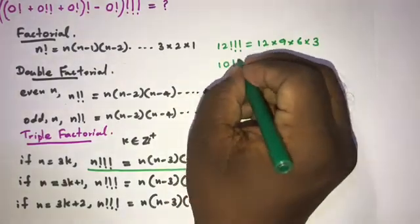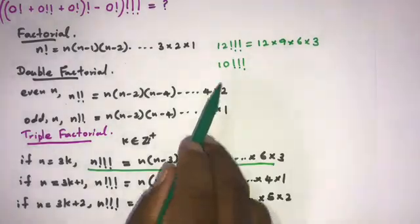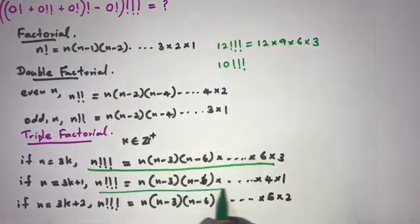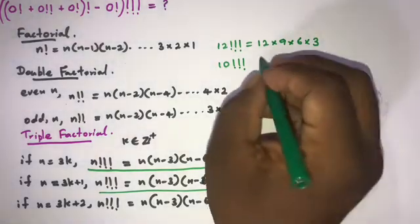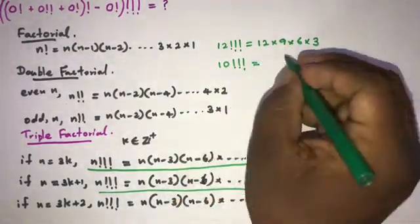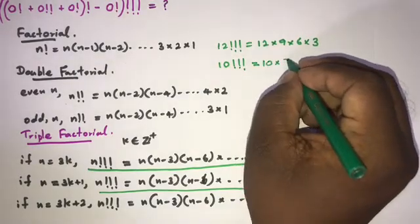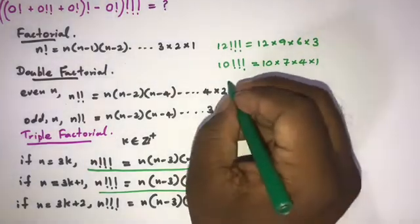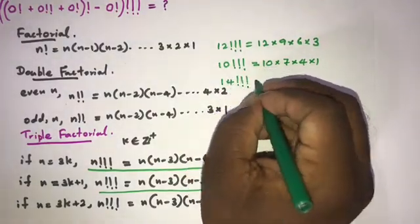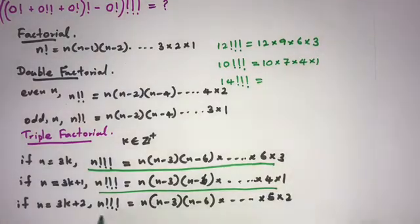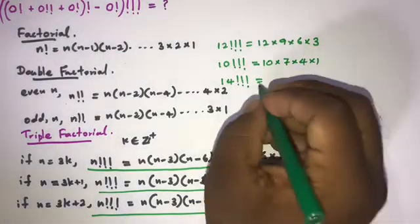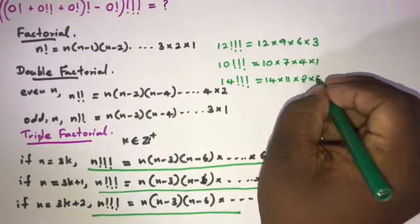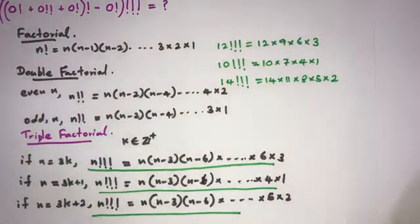For 10 triple factorial: since 10 = 3 × 3 + 1, we use the second formula, giving 10 times 7 times 4 times 1. For 14 triple factorial: since 14 = 3 × 4 + 2, we use the third formula, giving 14 times 11 times 8 times 5 times 2.